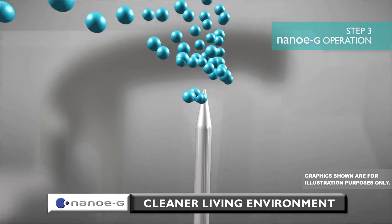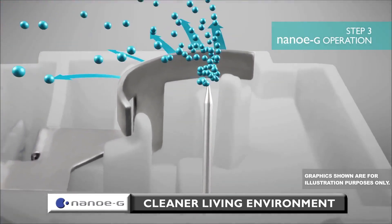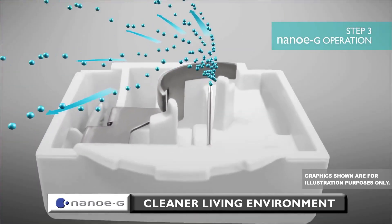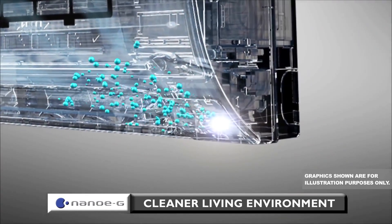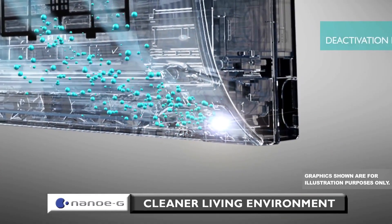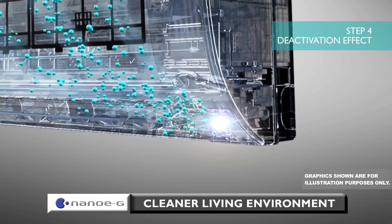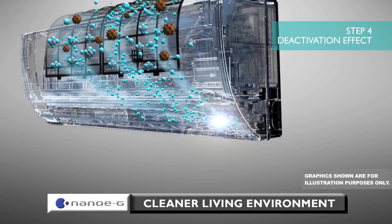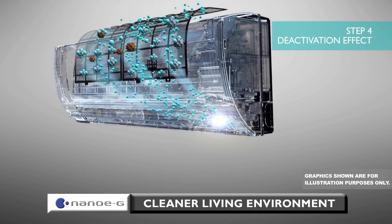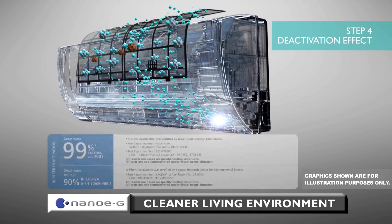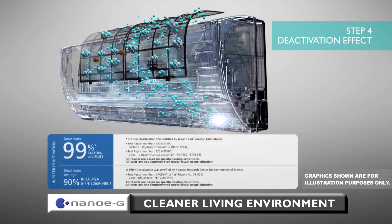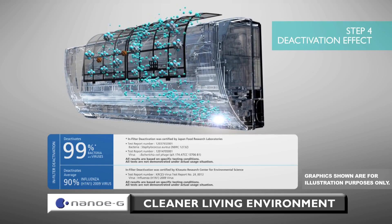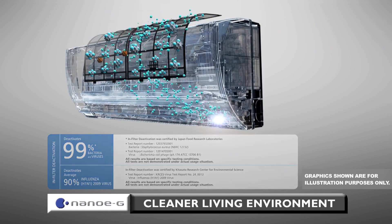Nano-EG particles spread to the filter using natural ion wind, a unique process that distributes Nano-EG particles even when the air conditioner is switched off. Nano-EG is then able to deactivate 99% of bacteria and viruses trapped in the filter within 2 hours.